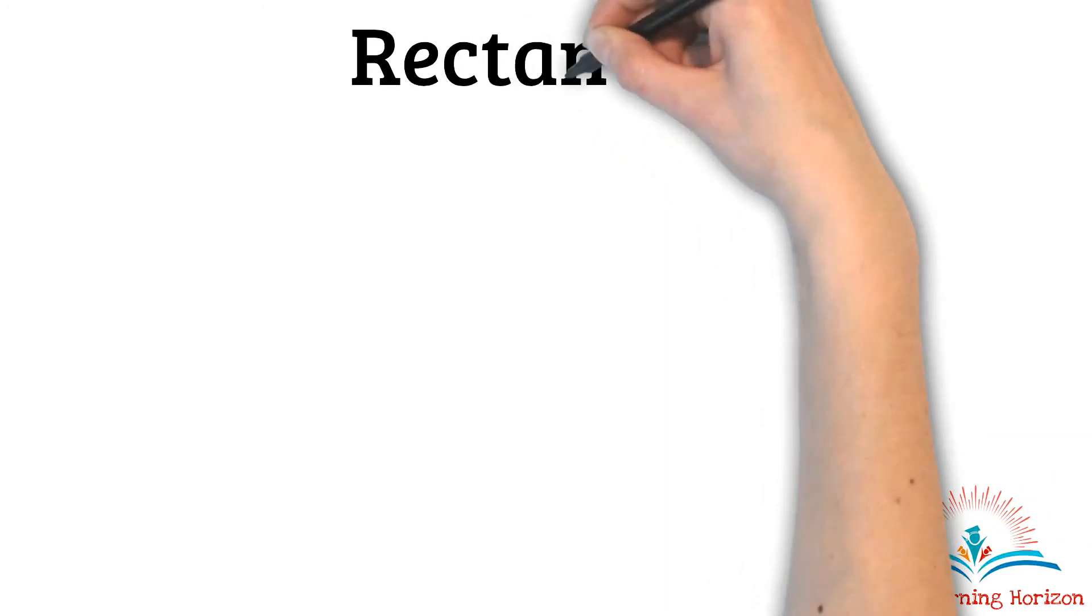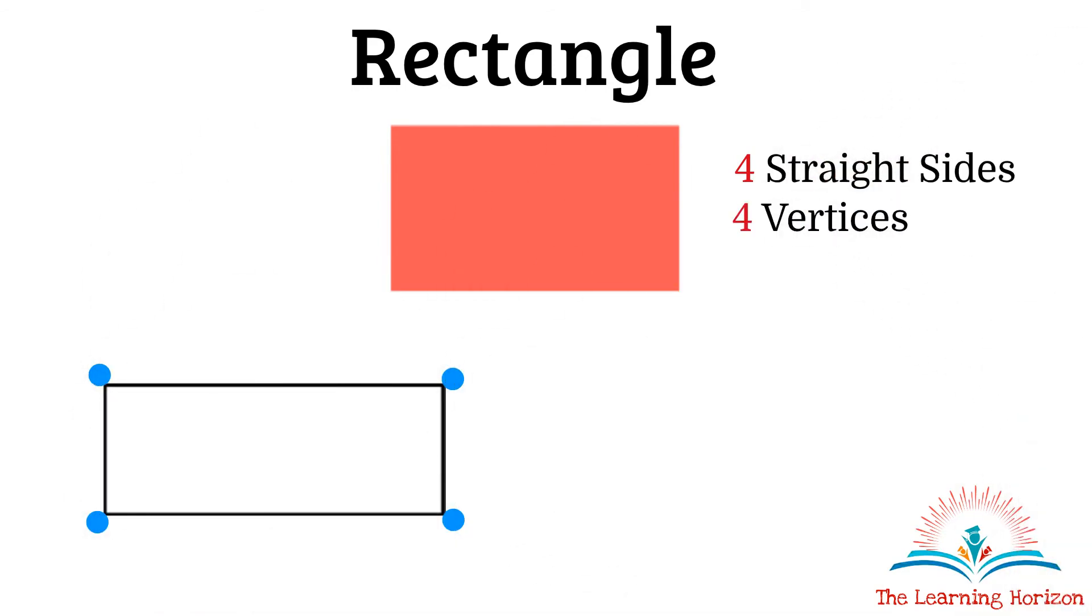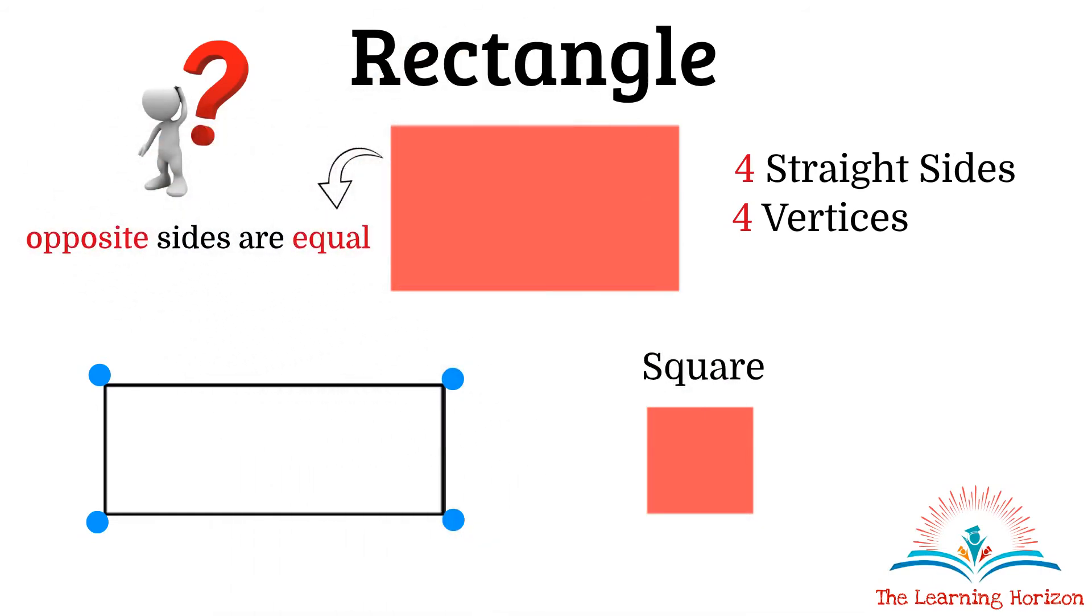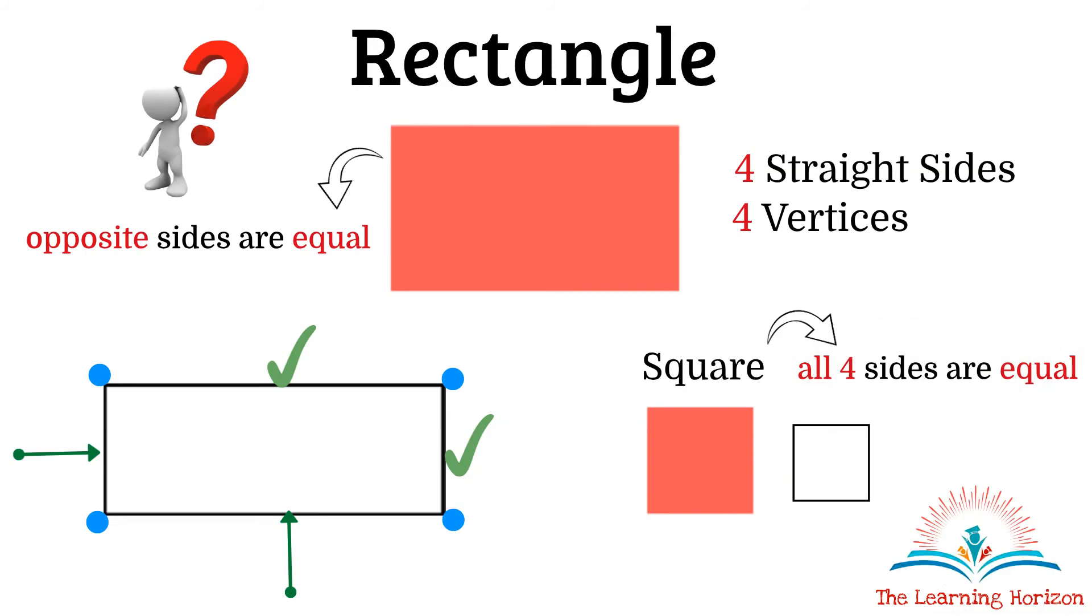Rectangle. Rectangle is again a shape with four sides and four vertices. But then how is a rectangle different from a square? In a rectangle, only the opposite sides are equal, that is this side is equal to this side and this side is equal to its opposite side, that is this one. But in a square we have all the four sides equal. Square and rectangle both have four sides. They are also called as quadrilaterals. Some real world examples for a rectangle are a door and a bookshelf.